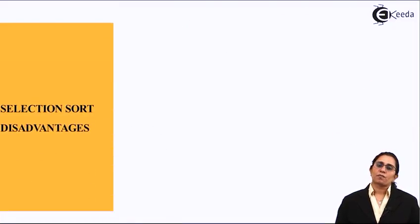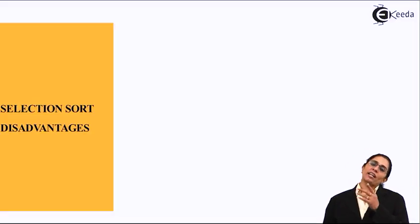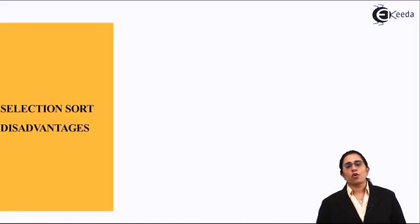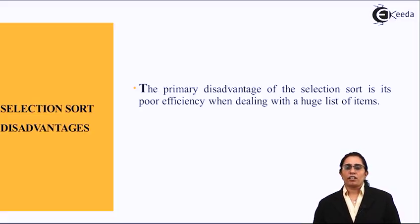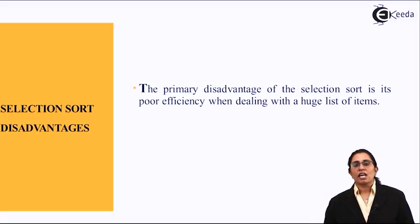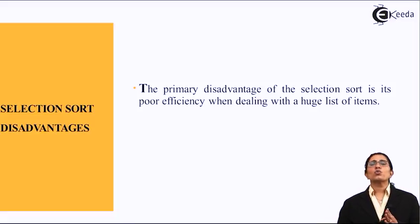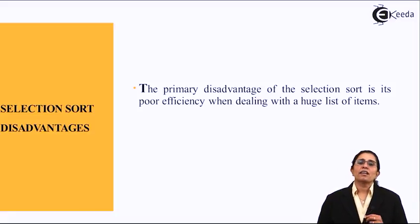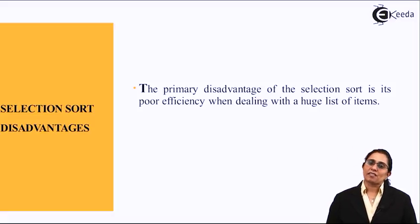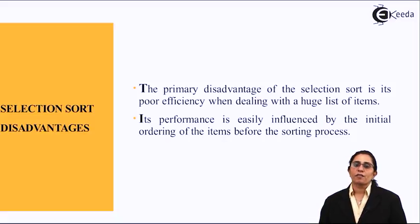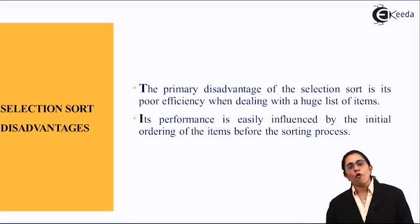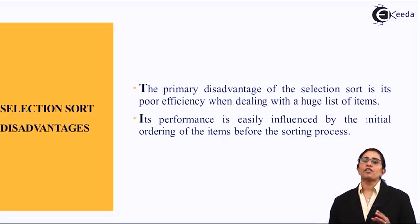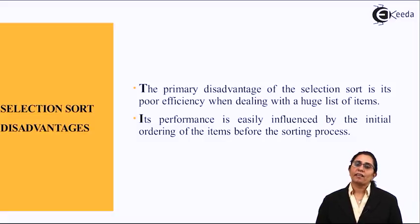The disadvantage of selection sort - the primary disadvantage is it has poor efficiency in dealing with huge lists of items. It works only on small lists. As list size increases, the efficiency of the selection sort algorithm decreases. The performance is easily influenced by the initial ordering of items before the sorting process starts.